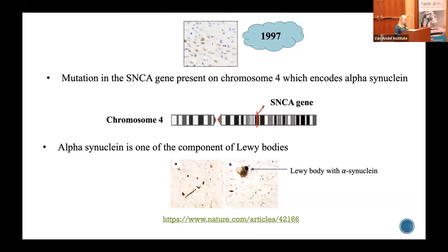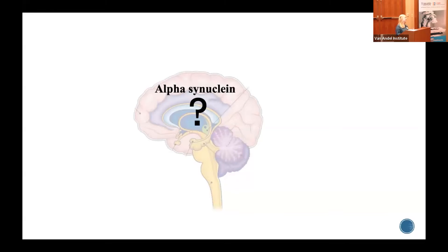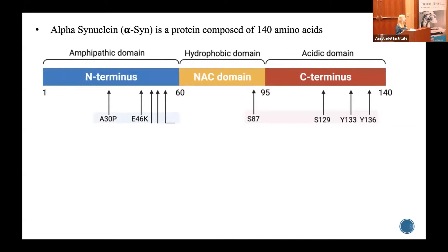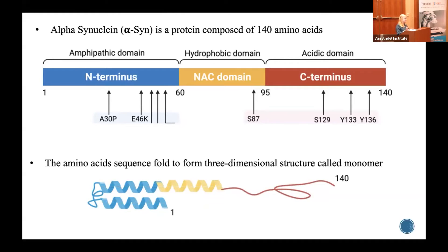So what is alpha-synuclein? I will talk about this. I'm assuming that not all of us are conversant with molecular biology, so I'll share some basic facts. Alpha-synuclein is a protein composed of 140 amino acids, which are present in a sequence. This sequence has three different sections, and these sections affect the function of alpha-synuclein. In a normal state, these 140 amino acids form a three-dimensional structure called a monomer — that is the normal form of alpha-synuclein found in a cell.